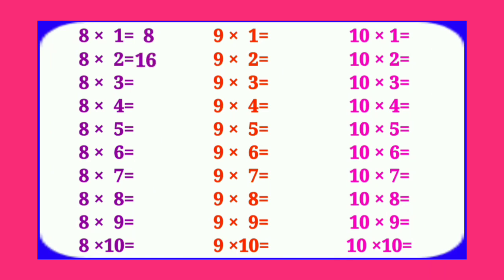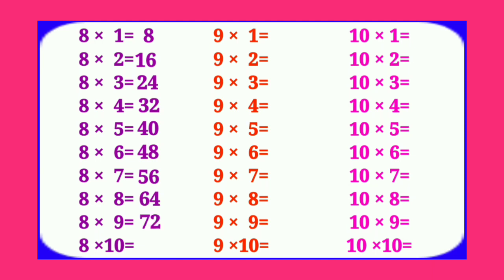8 3's are 24, 8 4's are 32, 8 5's are 40, 8 6's are 48, 8 7's are 56, 8 8's are 64, 8 9's are 72, 8 10's are 80. Table of 9. 9 1's are 9.